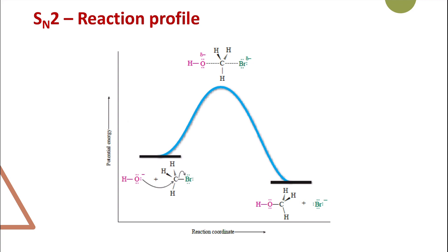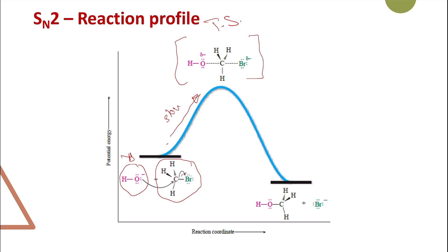Looking at the energy profile for this reaction: you start with your substrate — an alkyl halide and the hydroxide ion — at a certain energy level. The nucleophile starts to attack the electrophile and the leaving group starts to leave. We reach the transition state, which is a high energy state. This step is the slow step, the rate-determining step for the reaction. This is why the kinetics for SN2 depends on the concentration of both the substrate and the nucleophile, because the rate-determining step involves both components. This is why the kinetics are second order.